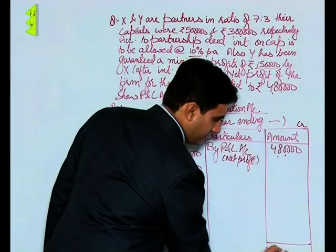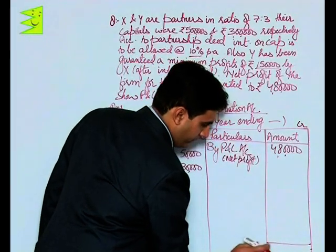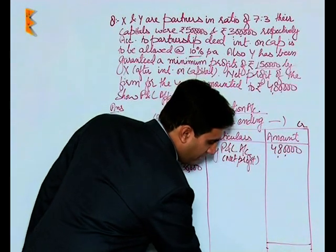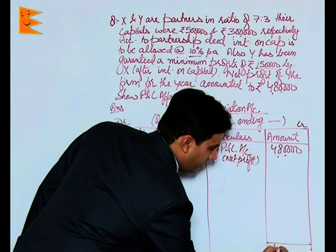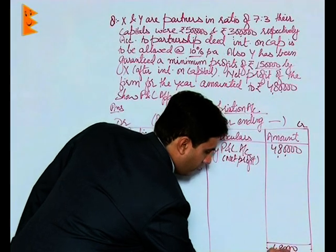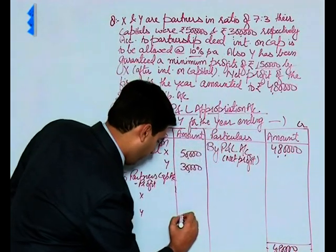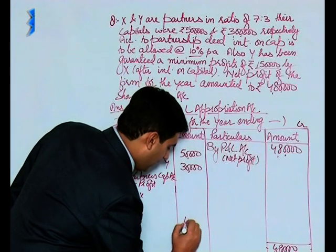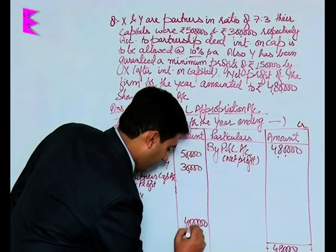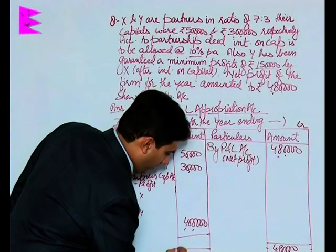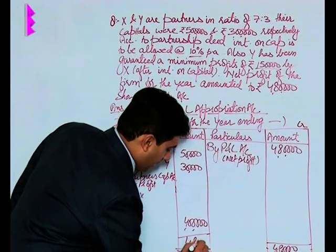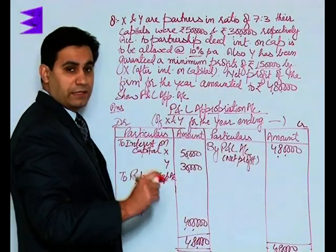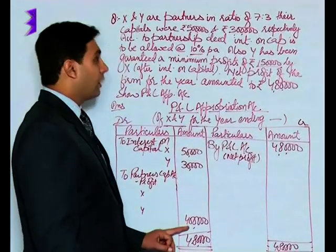Now students, the total profit that should be divided is 4 lakh 80,000 minus 80,000 that is appearing on the debit side. 480 minus this is 4 lakhs. 4 lakh has to be divided and the total would be 480. But how would this be divided and what would be the effect of guarantee? Let us understand it now. 4 lakh would be divided in the ratio of 7:3, that is the profit sharing ratio.